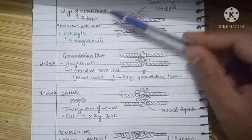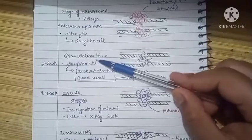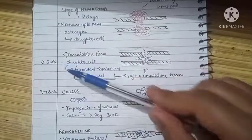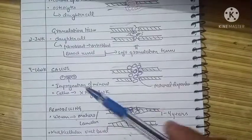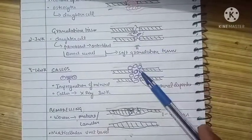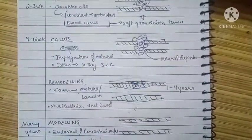We have studied three stages till now: hematoma formation lasting for seven days, granulation tissue lasting for two to three weeks, and callus formation lasting four to twelve weeks, where we have mineral deposition in between osteoblasts leading to formation of callus that can be seen within three weeks.